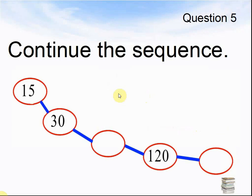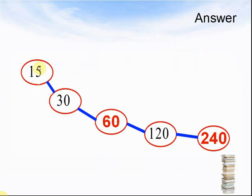Question 5: continue the sequence — what is happening to these numbers? 30 goes to something, something goes to 120, and 120 goes to something. Pause the video and answer the question. Here comes the answer: 15 is doubling to make 30, so double 30 makes 60, double 60 makes 120, and double 120 makes 240.